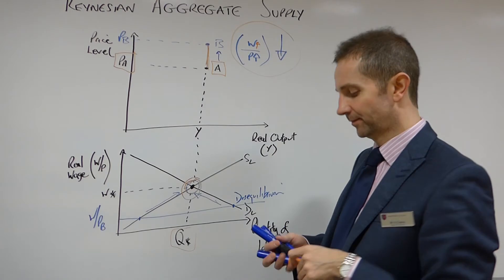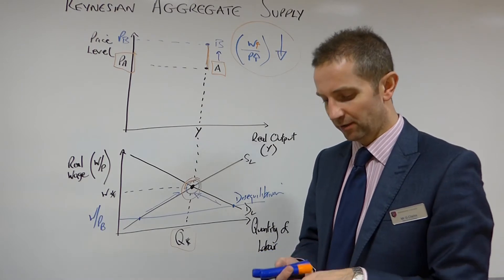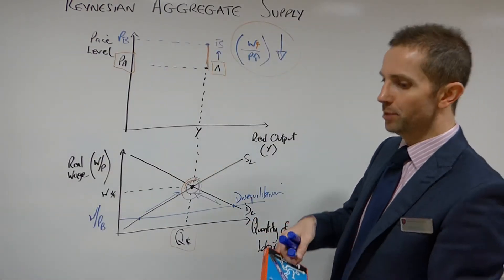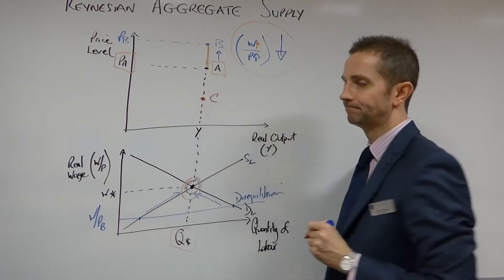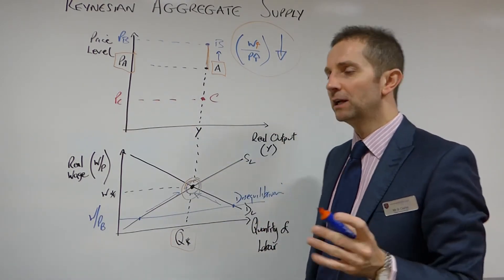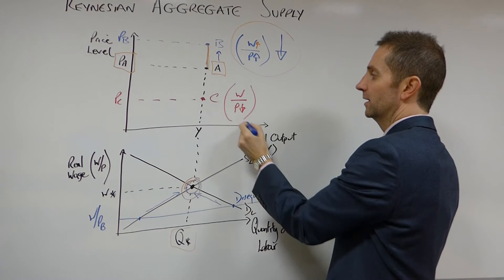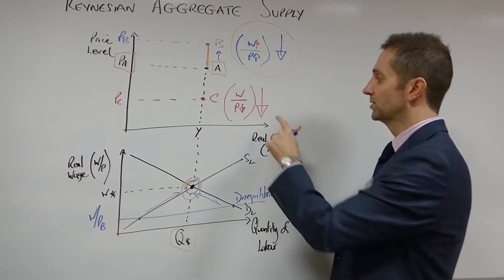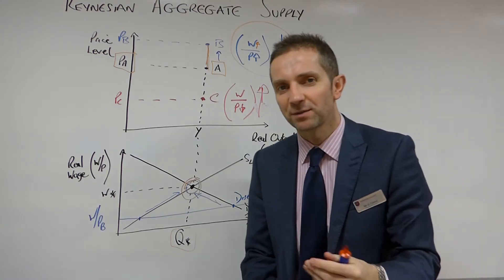Now, the interesting point on this one is what happens whenever there is a reduction in the price level. So what if the price level falls, rather than it being at point B or point A, what if the price level falls to point C down here? So once again, let's consider the real wage. Money wage remains the same, price level has fallen. Therefore, overall, the value of the real wage has, got that in the wrong direction, the value of the real wage has obviously increased because the price level has fallen.